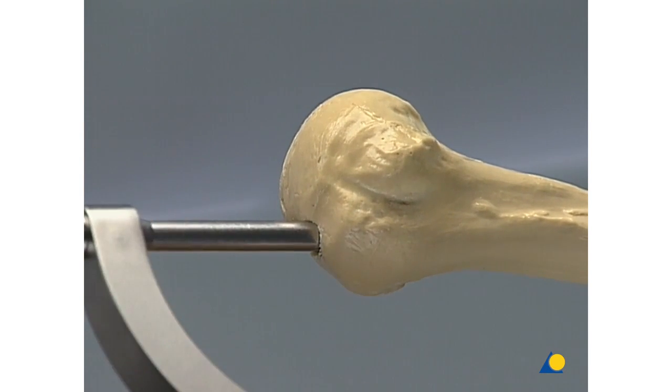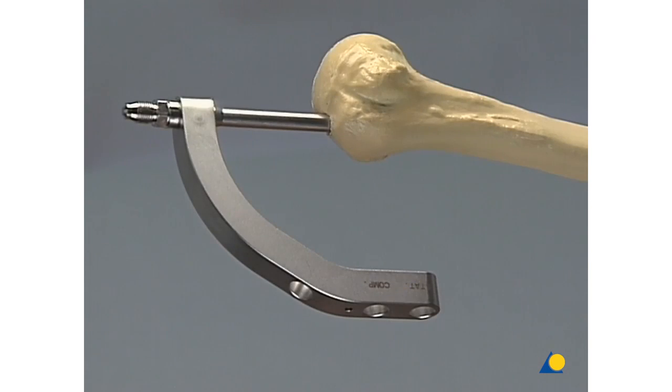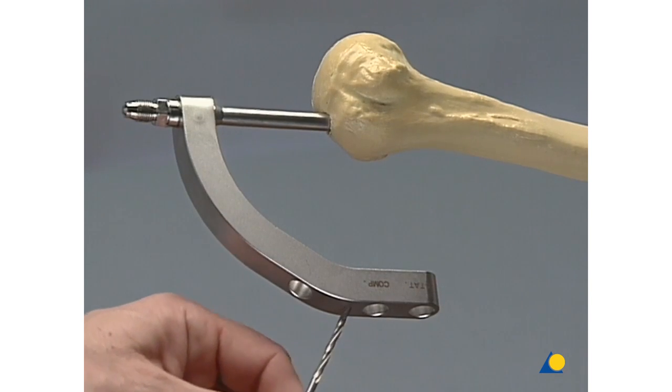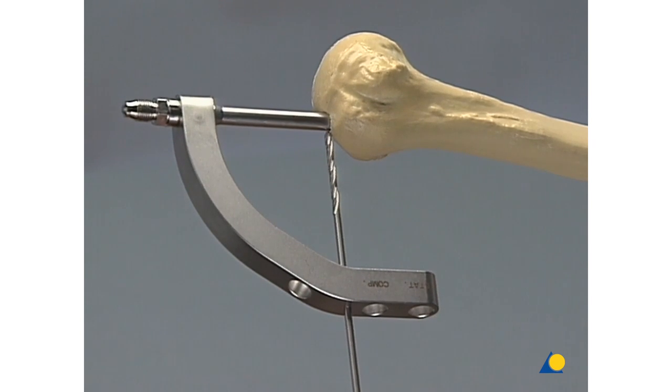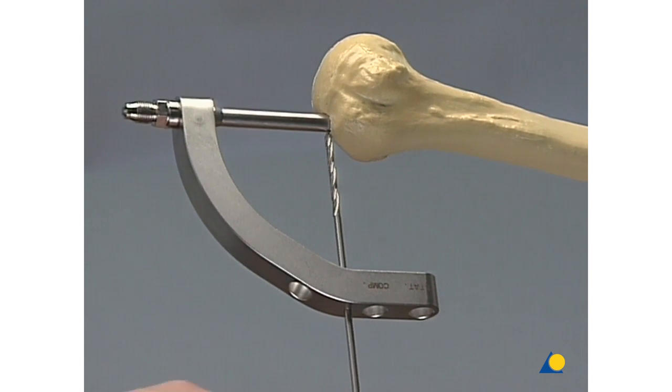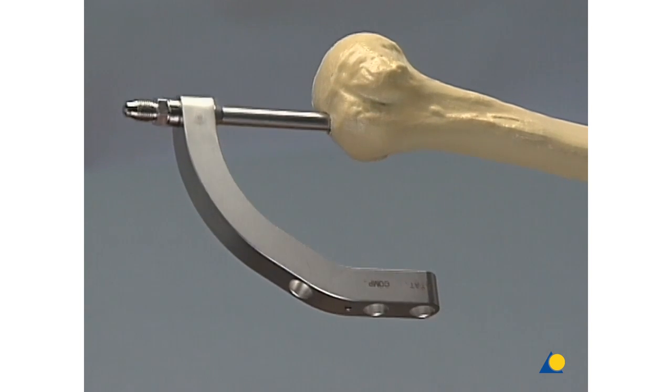To check the depth of the nail, insert a 3.2 mm drill bit through the hole in the insertion handle. Bury the nail completely into the humeral head to avoid subsequent irritation of the shoulder structures, even when the arm is adducted.